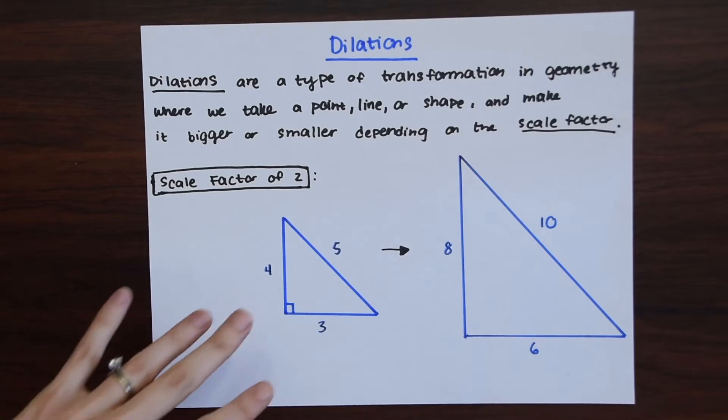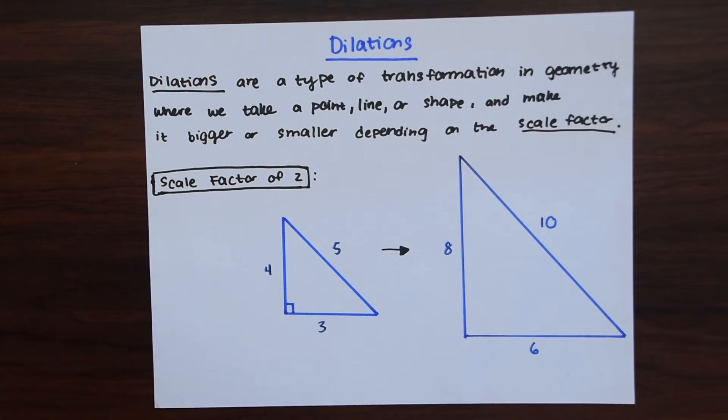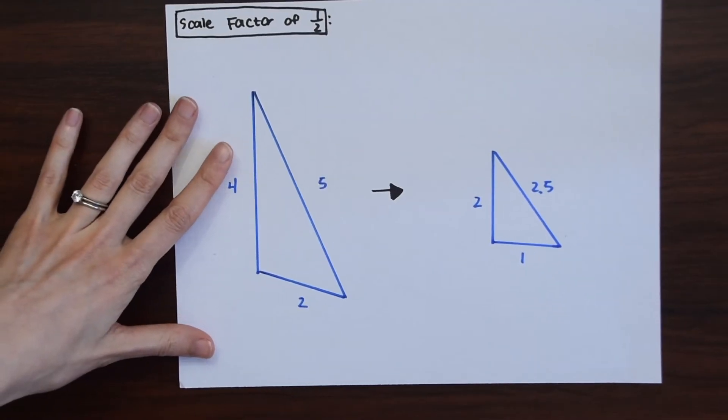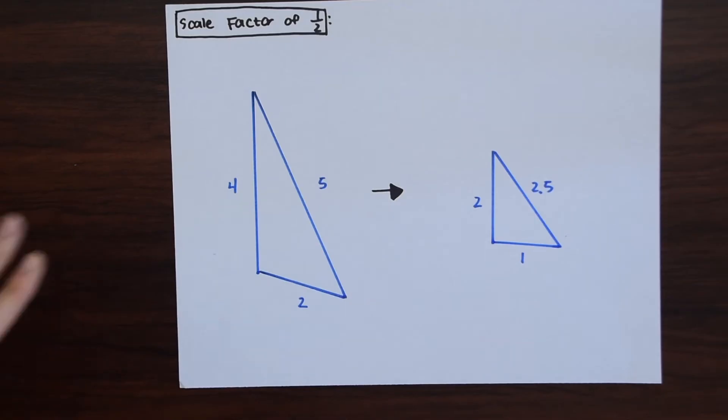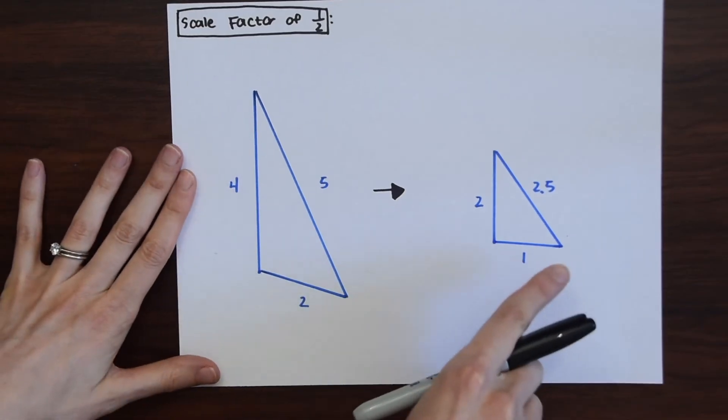So in this example we went from a small triangle to a bigger triangle but we can also do the opposite. We can go from a bigger triangle to a smaller triangle. So in this example we could see that the scale factor is a fraction, it's 1 half. So when the scale factor is less than 1 that means we're going to be making the shape smaller.